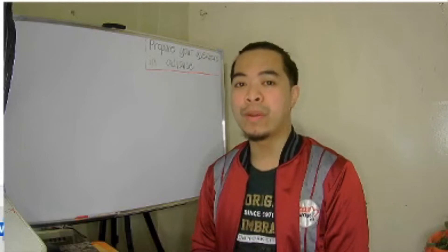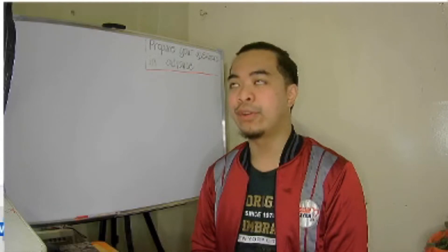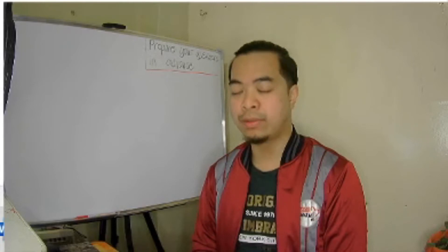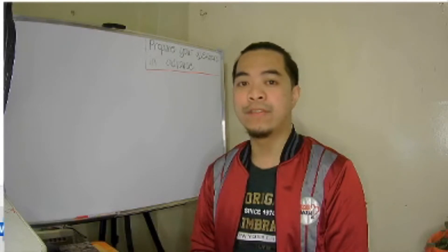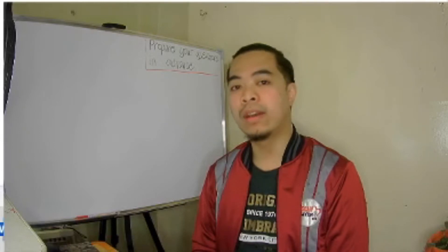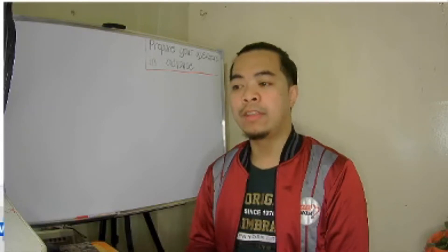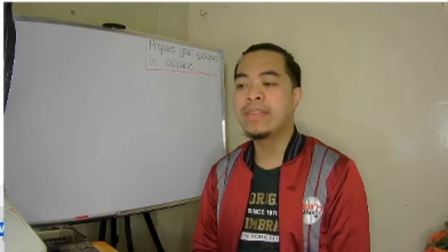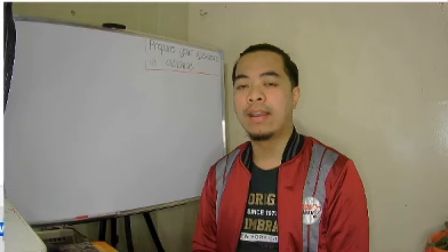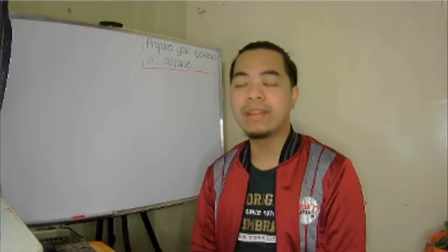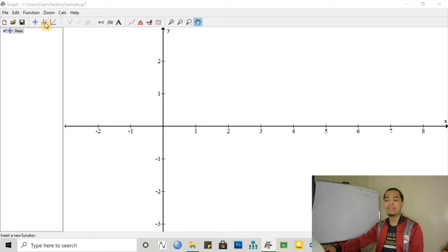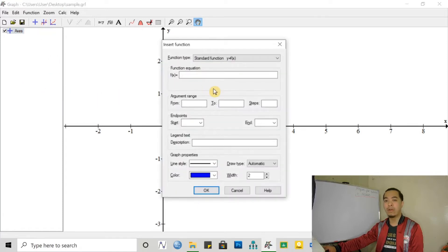Circles, for example, or parabolas opening to the left or to the right, or hyperbolas — those are examples of a relation and not a function because they do not pass the vertical line test. So how do we graph these kinds of equations? As I have said, they are merely relations and not a function. In that case, we cannot actually use the add function button because this is only for valid functions.